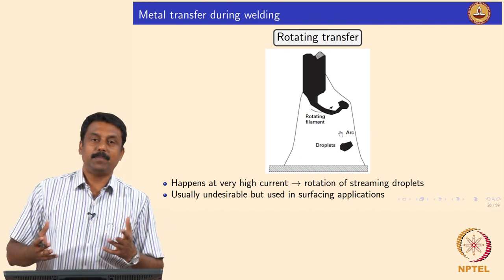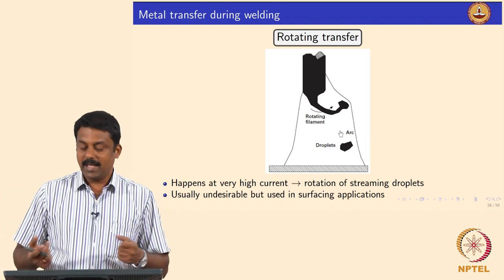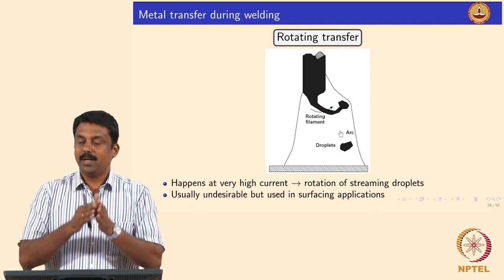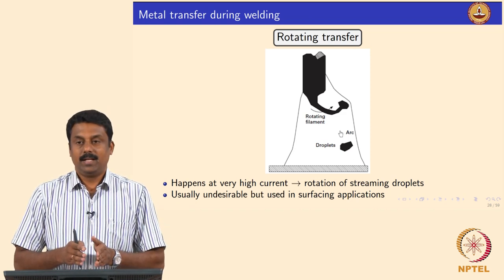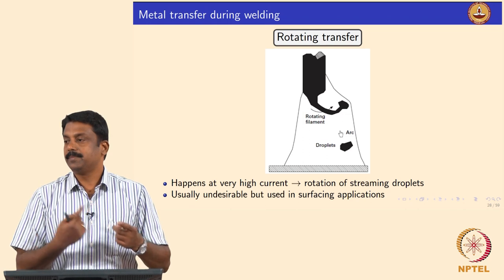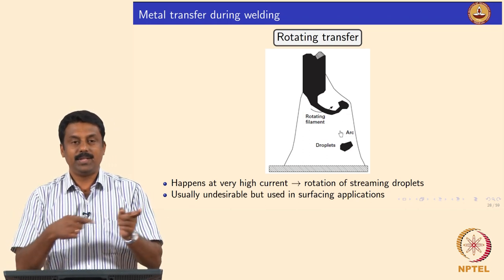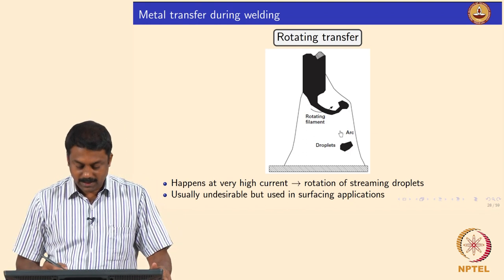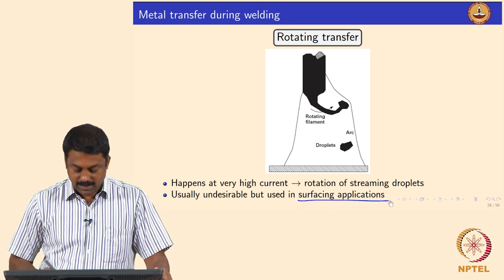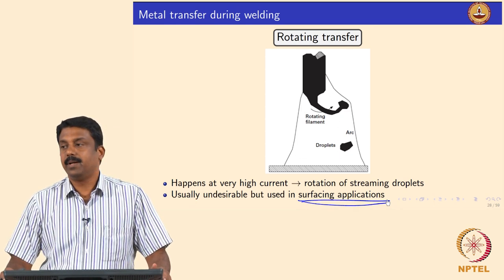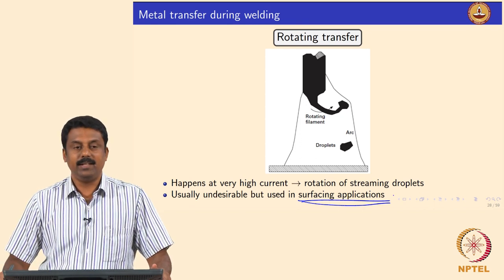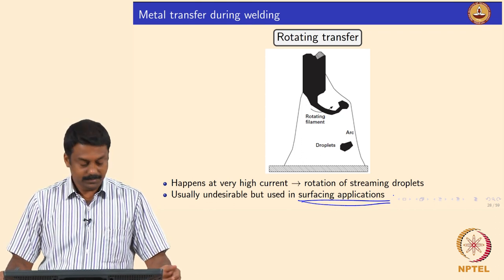If you increase the current further, jetting spray becomes rotating transfer, because Lorentz forces continuously form and certain magnetic forces start rotating or changing the path of the spray, so the spray goes everywhere. You end up transferring the droplet at various places. This is also sometimes used for surfacing using FCAW or GMAW surfacing, but for welding applications it is not advisable.